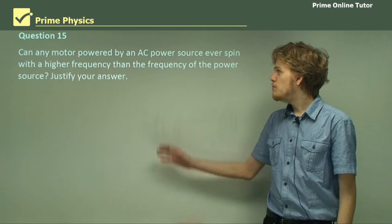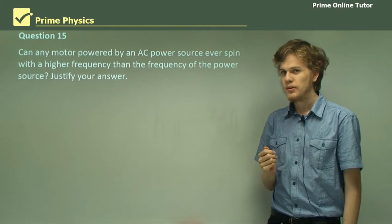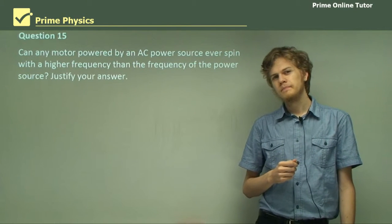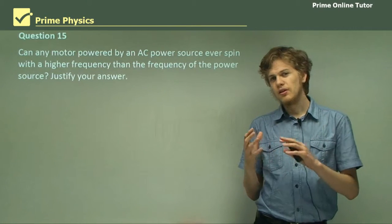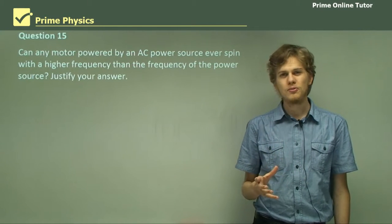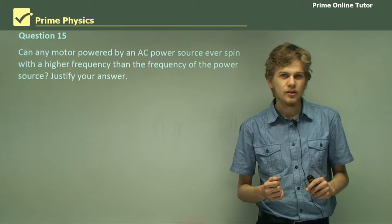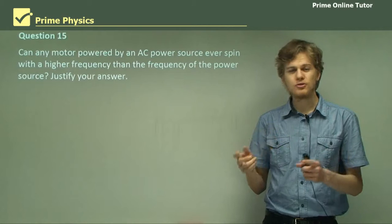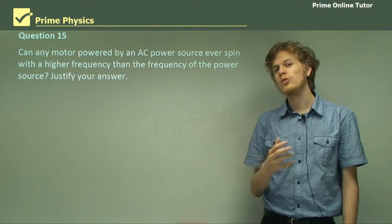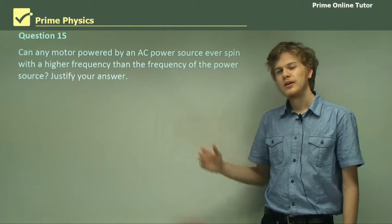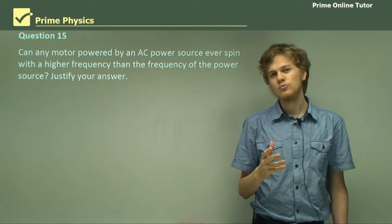Question 15. Can any motor powered by an AC power source ever spin with a higher frequency than the frequency of the power source? Justify your answer. So let's give this some thought. If we have an AC power source and an AC motor with brushes, then the motor's coil has to spin at the same rate as the frequency of the power source. So, no good there. What if we have an AC induction motor? Well, in that case, we'll have a varying AC current through each set of electromagnets that will pull the coil around at the same rate as the rate at which the power source is changing within the electromagnets. So once again, that doesn't really help us. The electromagnet's frequency changes with the same frequency as the power source.